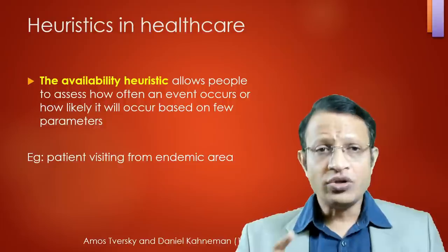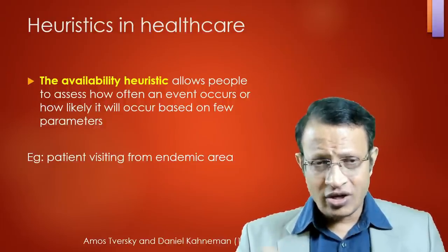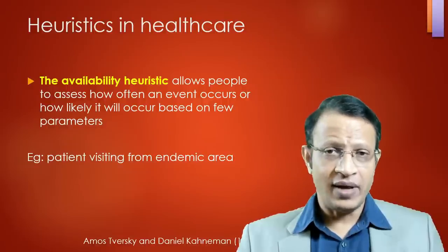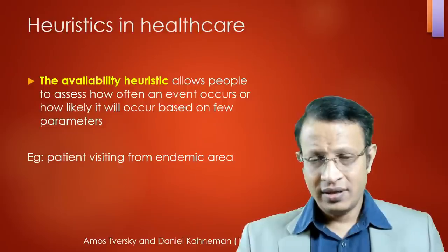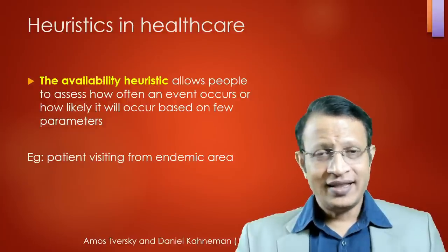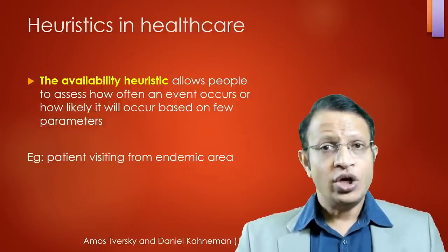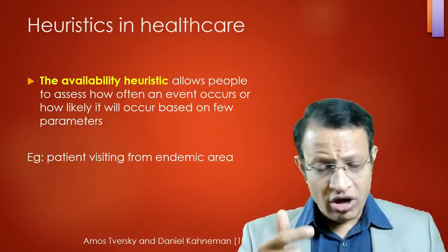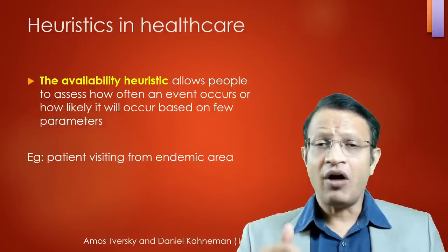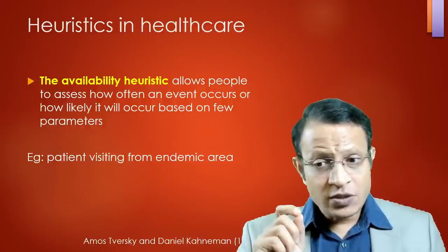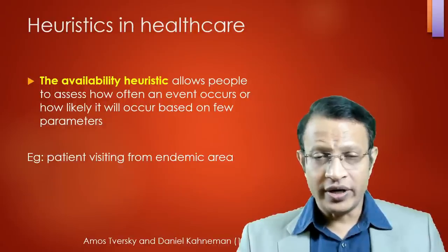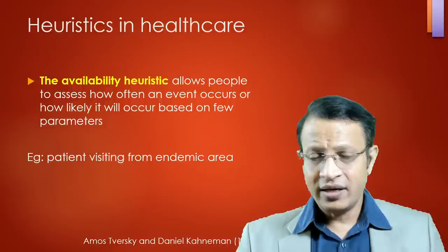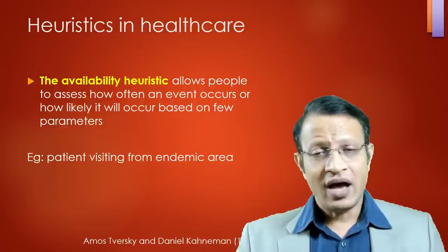The third is availability heuristics, which allows people to assess how often an event occurs or how likely it will occur based on a few parameters. For example, if a patient from an endemic area of malaria reports fever and chills, the first diagnosis will invariably be malaria. Heuristic models are applied throughout healthcare based on resource constraints, availability of manpower, instruments, medicines, specialists, and specialized skills. Unfortunately, when medical negligence is assessed, it is often judged by the idealistic model — which is wrong.